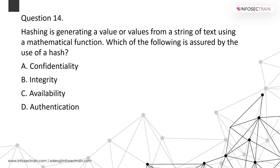Hashing generates values from a string of text using a mathematical function. Hashing is used to assure integrity. For confidentiality, encryption is used — the message is encrypted into an unreadable format so an attacker sitting in between cannot read it, but they could modify it. To maintain that we use integrity via hashing — no message modification should go undetected.